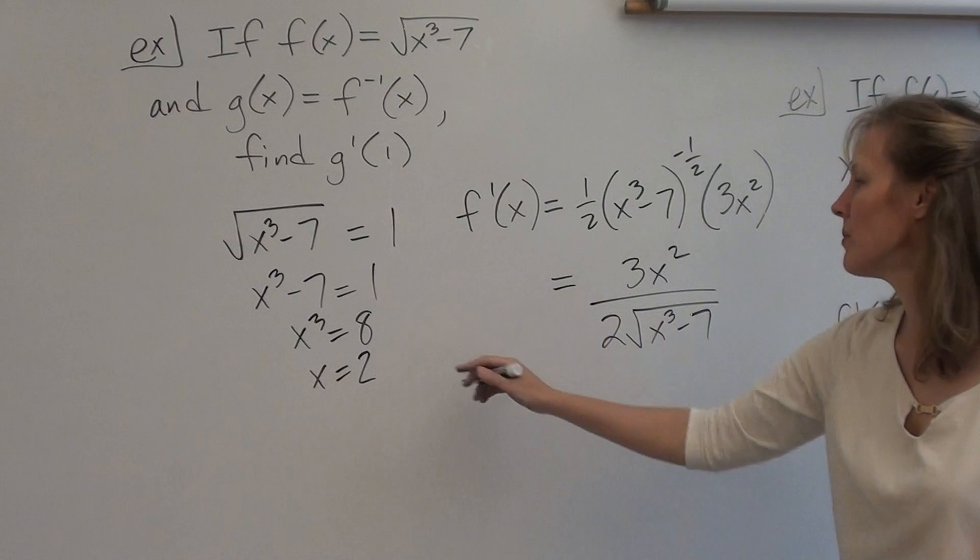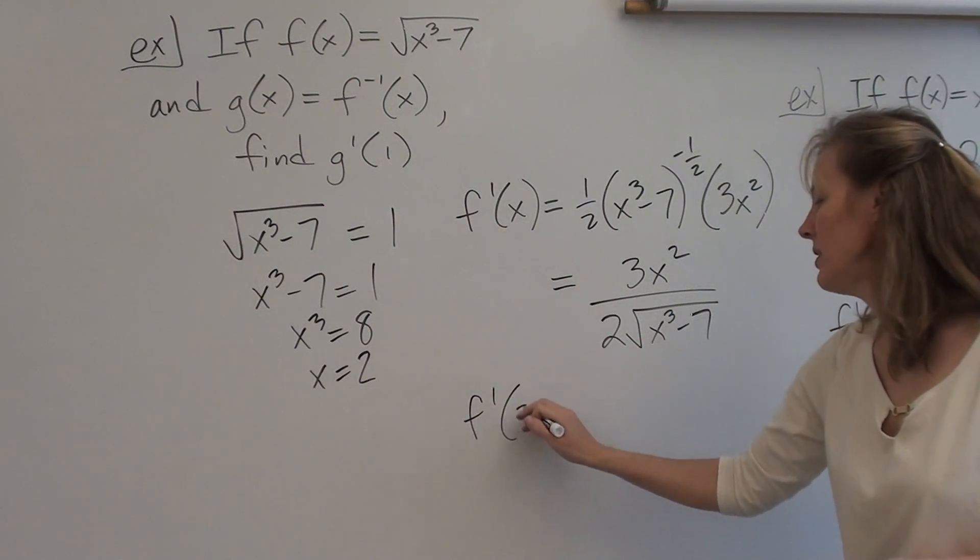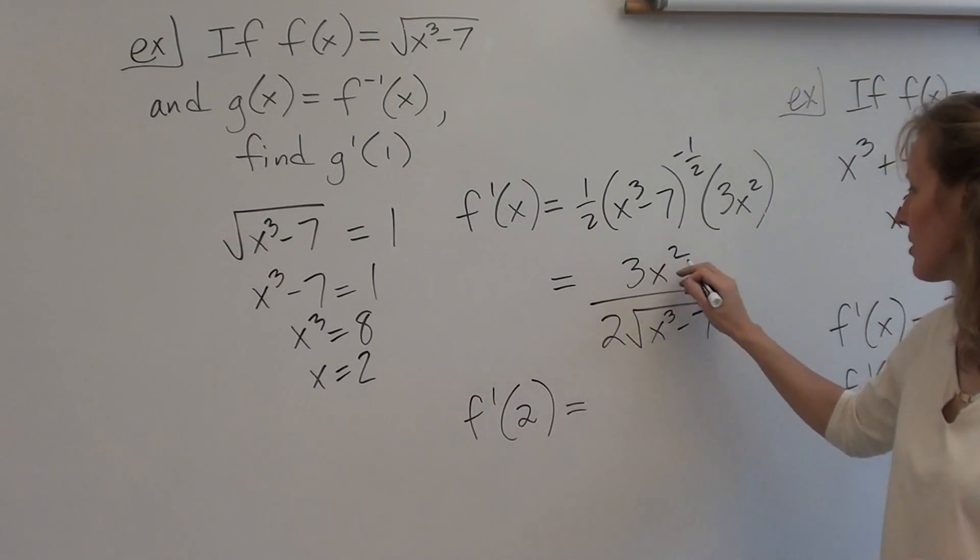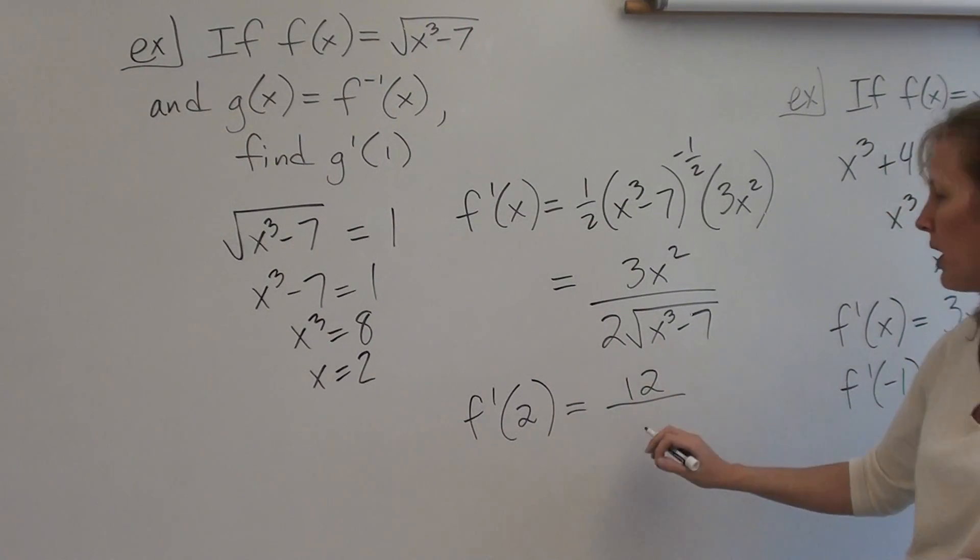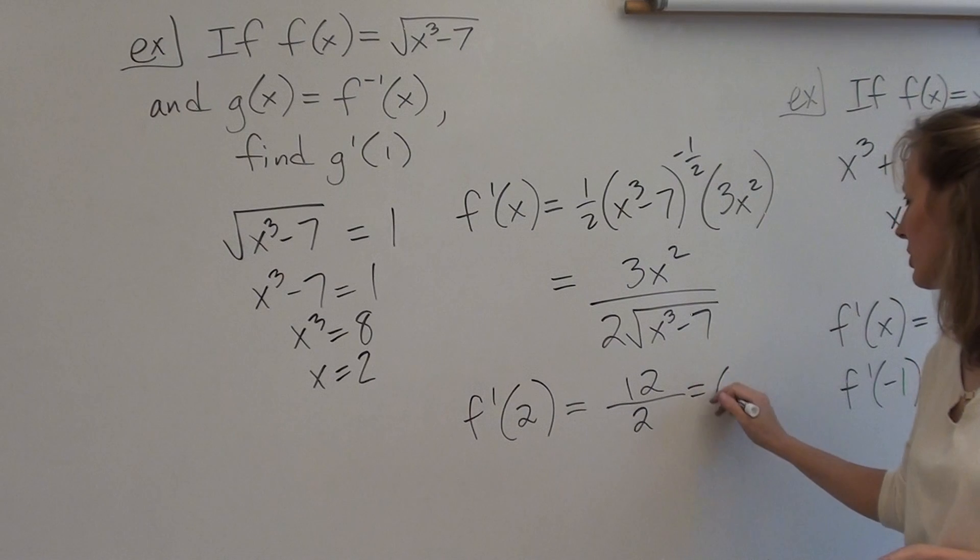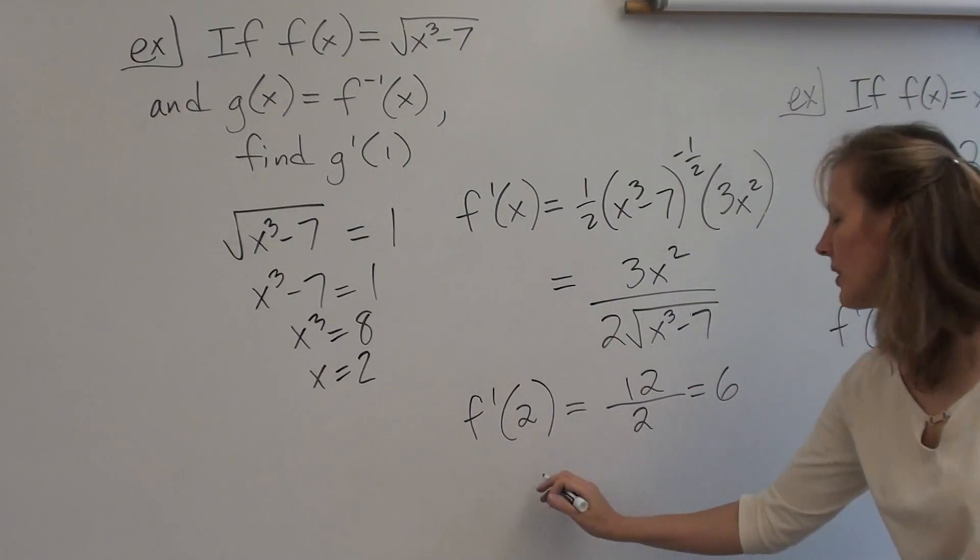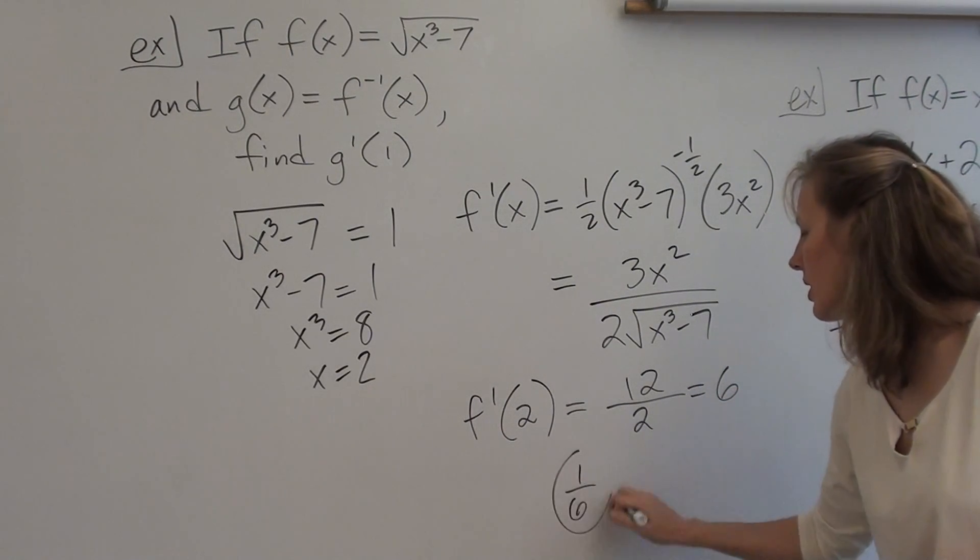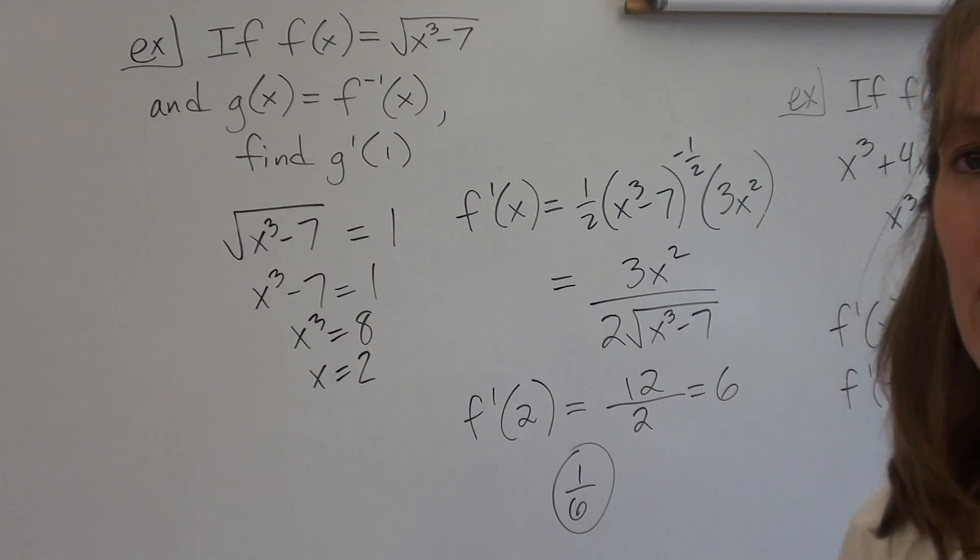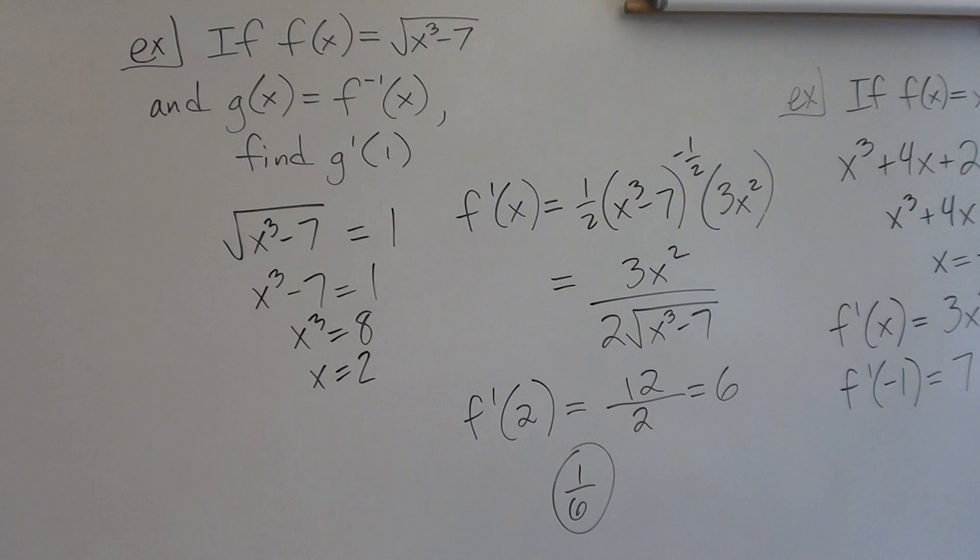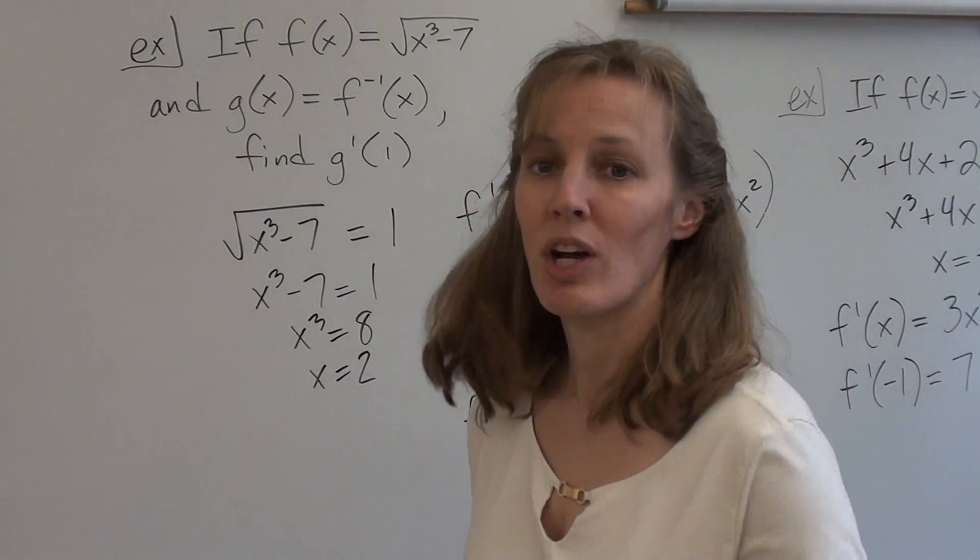Then we plug the number we found in the first step in. So we get 3 times 4 is 12, over 2 times 8 minus 7, which is 1. So we get 12 over 2, or 6. So our final answer is 1 6th. Don't forget you've got to take the reciprocal at the end for your final answer. Most of these problems, the answers will end up being a fraction. That's it in a nutshell.